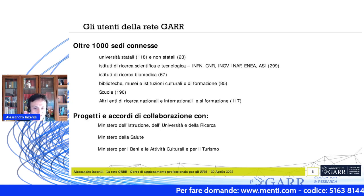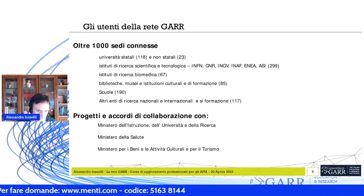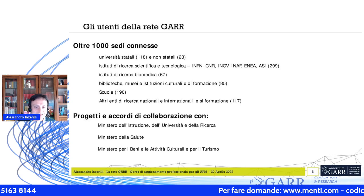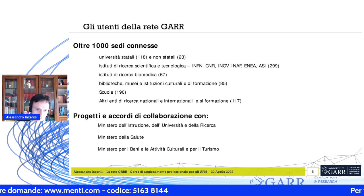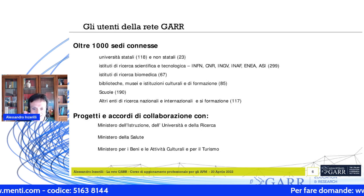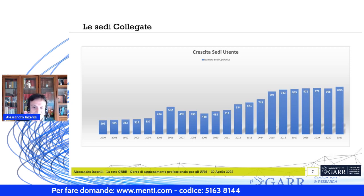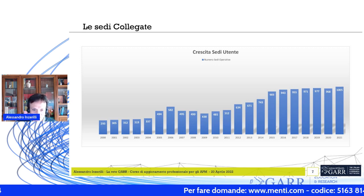I ministeri con cui GAR collabora e da cui riceve fondi sono il Ministero dell'Università e della Ricerca, il Ministero dell'Istruzione per la parte scuole, il Ministero della Salute per la parte di ricerca medica e quello dei Beni e delle Attività Culturali per alcune altre istituzioni collegate. Nel tempo la rete è cresciuta in termini di sedi collegate, raggiungendo attualmente oltre mille sedi.